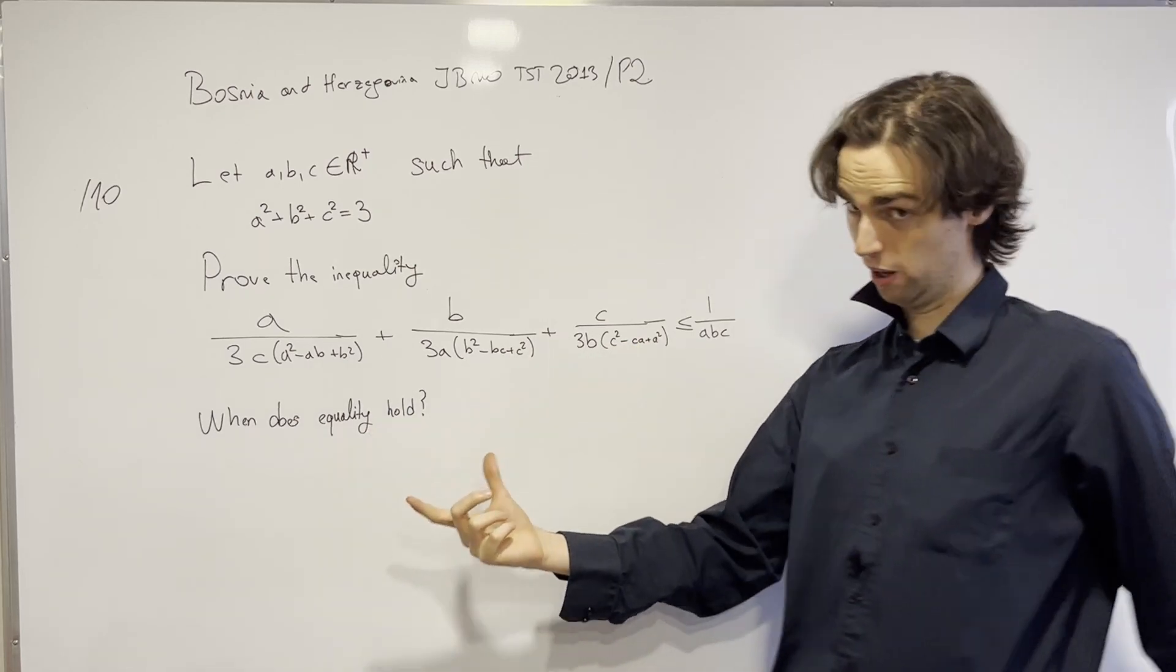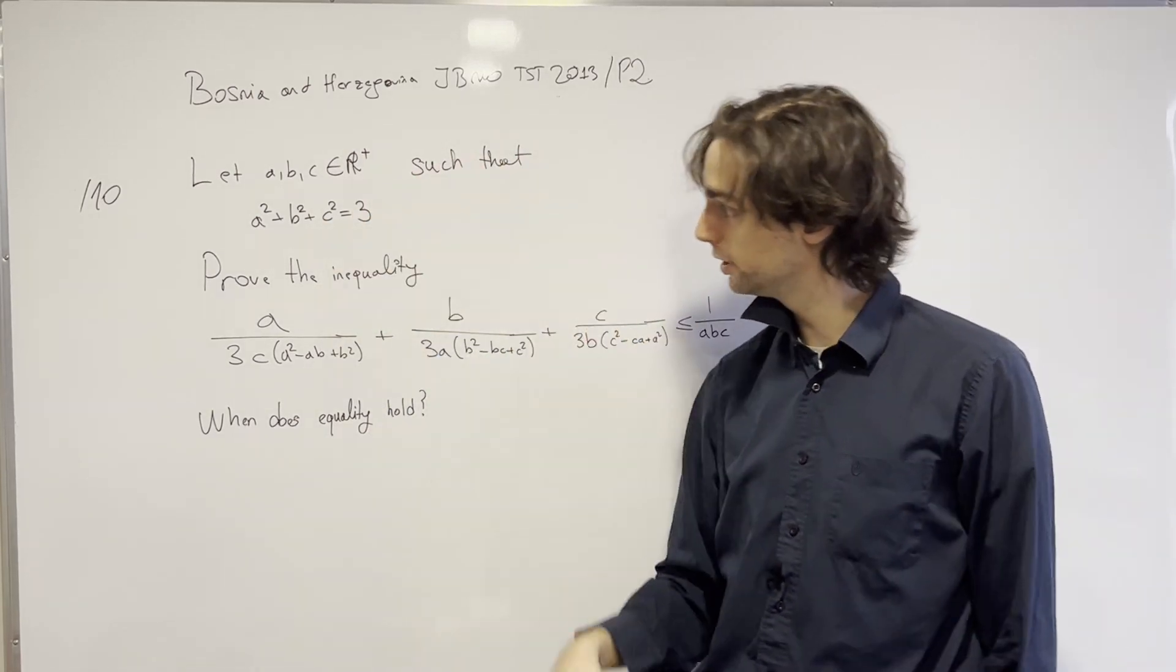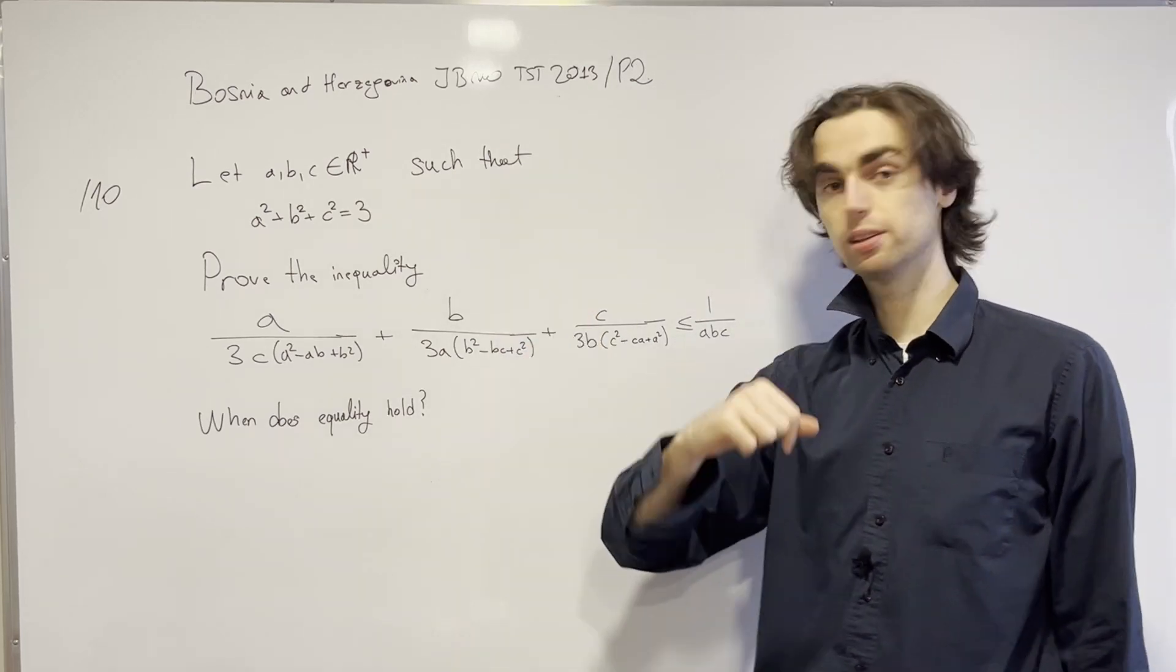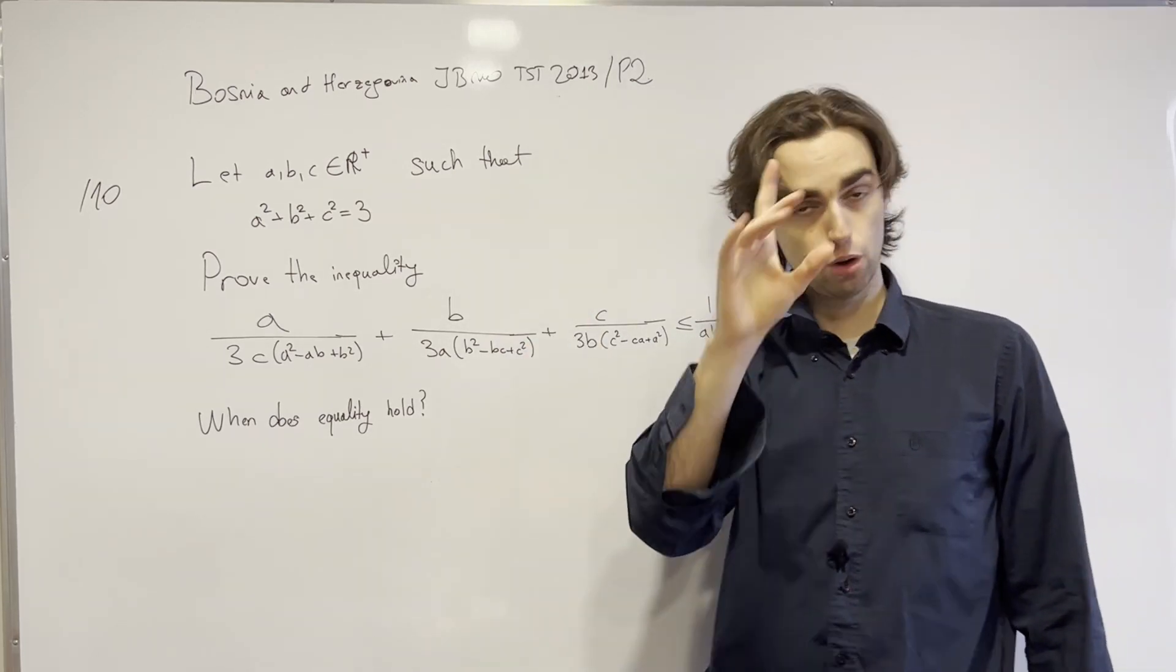How would you deal with this inequality taking into account that a²+b²+c² is 3 and these are positive real numbers? Pause now and I hope you've paused.